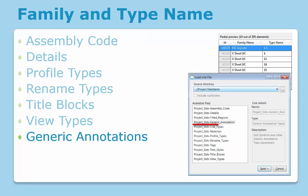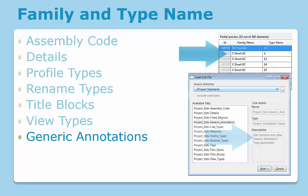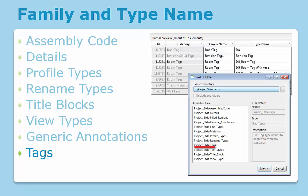The generic annotations link may be used to edit symbols and other generic annotation type parameters. Symbols and match line families are managed within the generic annotation category. You can use the project standards annotation link to keep naming standards in alignment with company standards. The tags link may be used to edit tag type name to align with company standards.